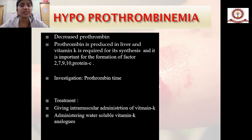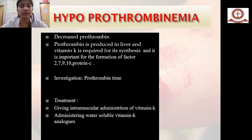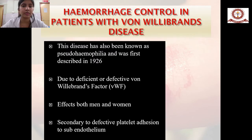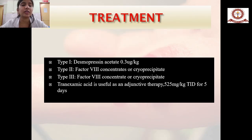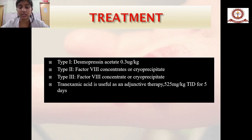Hypoprothrombinemia involves decreased prothrombin level; prothrombin is produced in the liver and vitamin K is required for its synthesis, being important for formation of factors 2, 7, 9, and 10. Investigation is prothrombin time and treatment is intramuscular administration of vitamin K and vitamin K analog substitutes. Von Willebrand disease, also known as pseudohemophilia, was first described in 1926 and is due to deficiency of Von Willebrand factor, affecting both men and women through defective platelet adhesion to subendothelium. Treatment: type I receives desmopressin acetate 0.3 mcg/kg; types II and III receive factor VIII concentrate or cryoprecipitate; tranexamic acid 5.5 mg/kg is useful as adjunctive therapy.